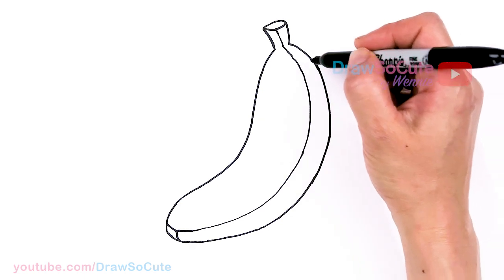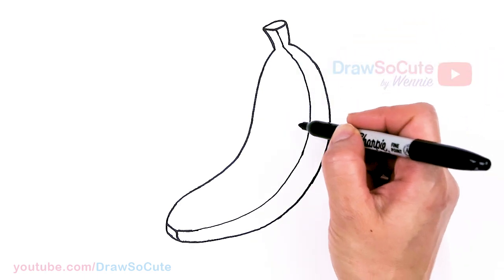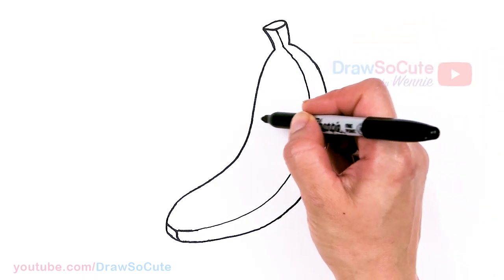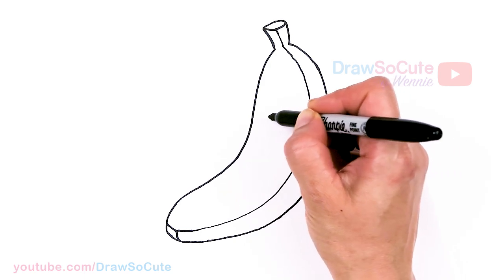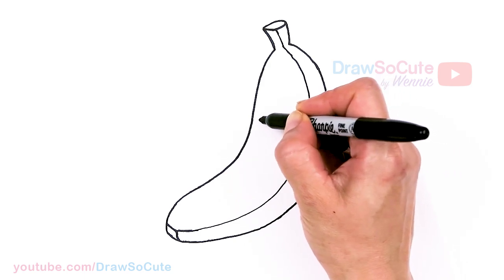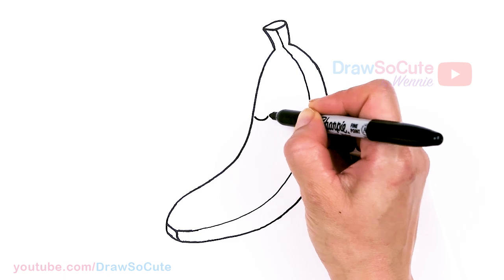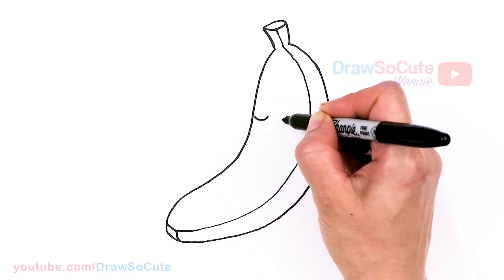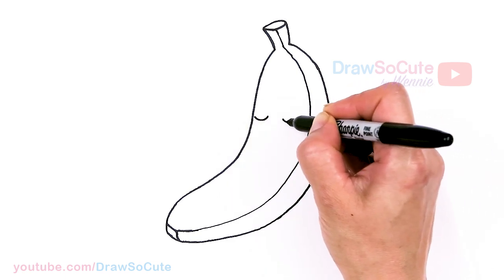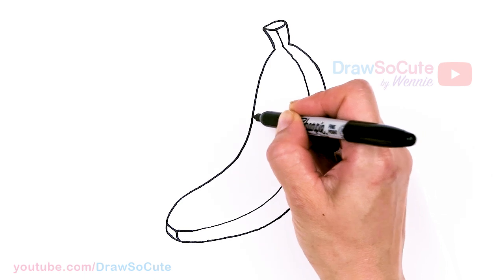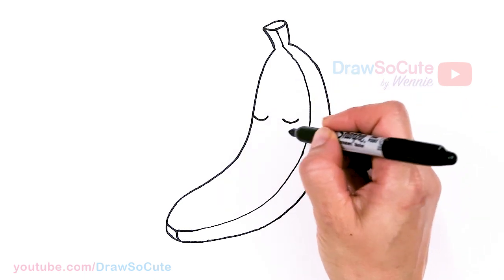But if you want to make it a Draw So Cute banana and bring it to life, let's add some eyes. So let's say about this area right here. I'm going to go ahead and about right here. I'm just going to make a very chill banana. About right there. And there. Just relaxing. Eyes and then the mouth. About right here.